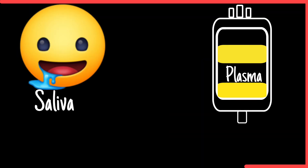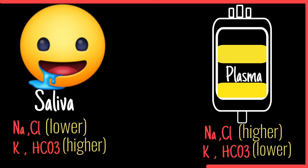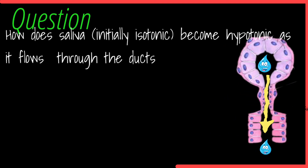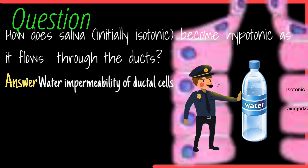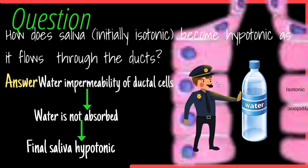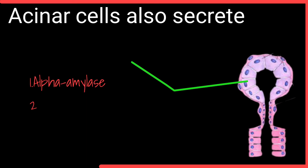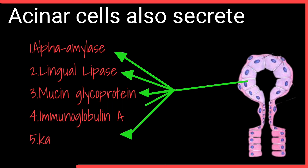The combined action of these transporters is absorption of sodium and chloride and secretion of potassium and bicarbonate. So, concentration of sodium and chloride are lower than their plasma concentration, and concentration of potassium and bicarbonate are higher than their plasma concentration. A question may arise: how does saliva, which was initially isotonic, become hypotonic as it flows through the ducts? The answer is due to the water impermeability of the ductal cells. As a result, water is not absorbed along with the solute, making the final saliva hypotonic. The secretory cells also secrete organic constituents such as alpha-amylase, lingual lipase, mucin glycoproteins, immunoglobulin A, and kallikrein.